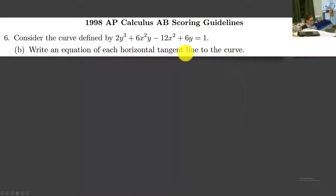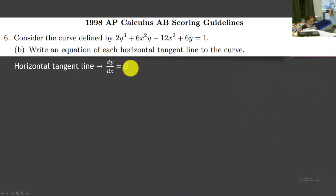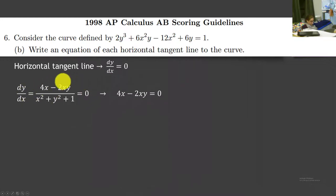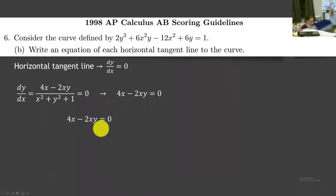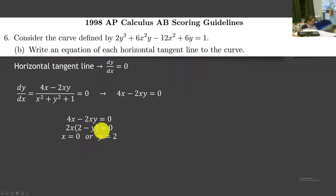Write an equation of each horizontal tangent line to the curve. We know horizontal tangent line means the derivative equals 0 — slope is 0. So let's set dy/dx equal to 0. If we're setting this equal to 0, that can only happen if the numerator equals 0. So now we have 4x minus 2xy equals 0. Factoring out 2x, we have 2x times (2 minus y) equals 0, giving us two solutions: either x equals 0 or y equals 2.